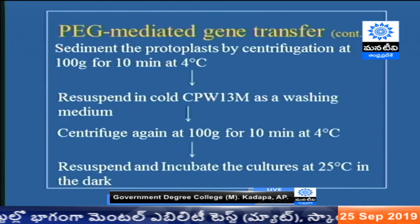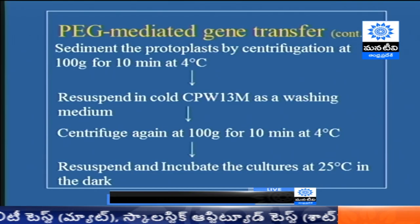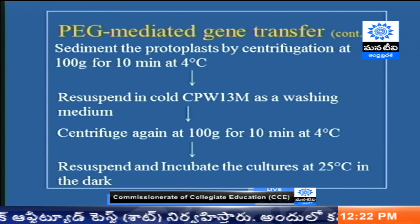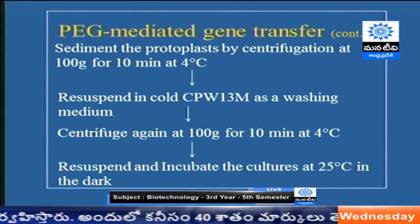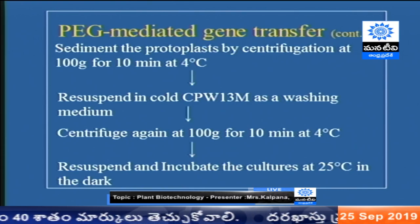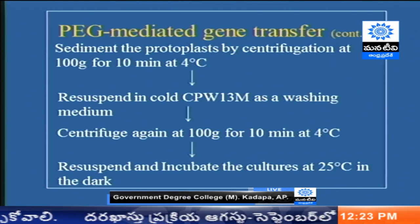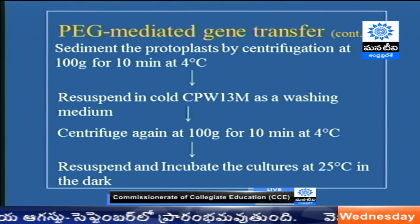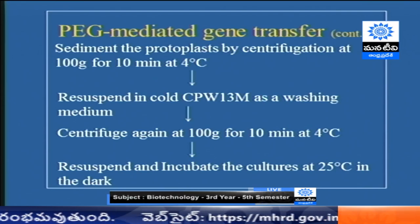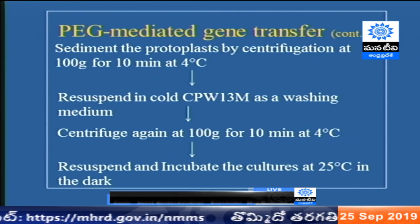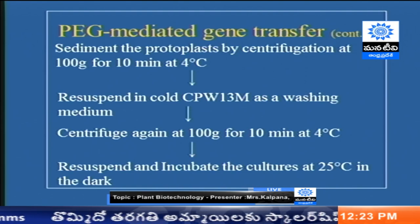Then we sediment the protoplasts by centrifugation at very low rpm — 100 g for 10 minutes at 4 degrees — and resuspend in cold culture medium as a washing medium. Then centrifuge again at 100 g for 10 minutes at 4 degrees centigrade. Finally, resuspend and incubate the cultures at 25 degrees plus or minus 1 degree in the dark. That is PEG-mediated gene transfer.